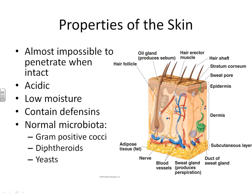The second group are the diphtheroids. The most common in this group is Propionibacterium acnes, which you could probably guess is the causative agent of acne. The third group are yeasts. The main yeast we're going to see is Candida albicans, but there will be many more as we go throughout.